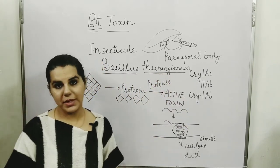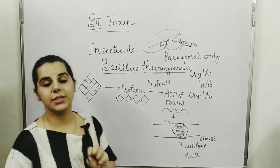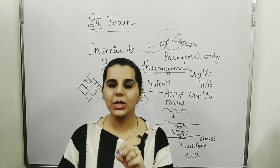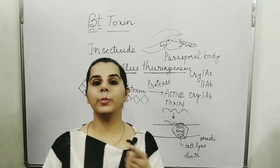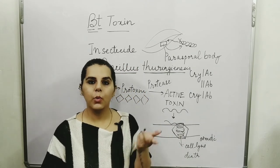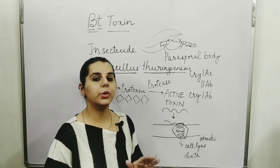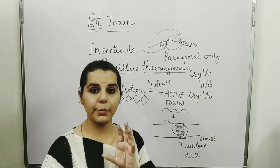This is how BT toxin is successfully being used as an insecticide to protect crops. In this way, BT corn, BT maize, BT brinjal, and other BT plants are available to save crop production.